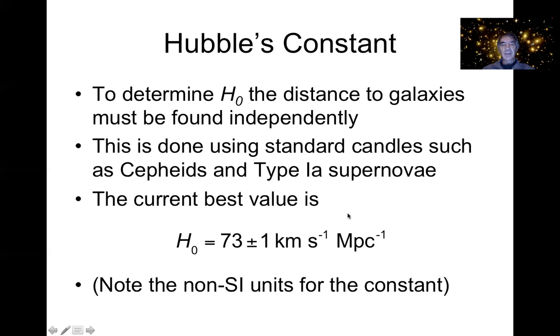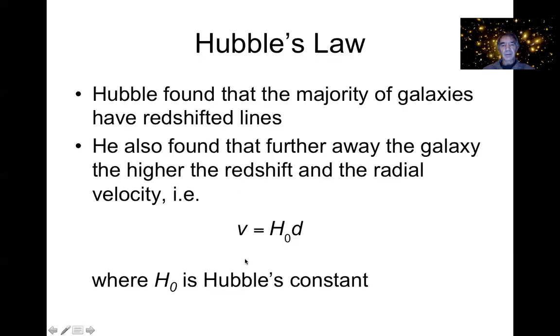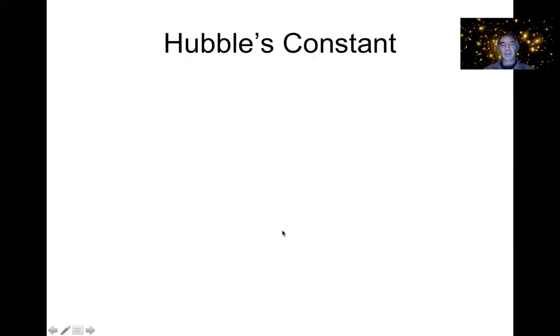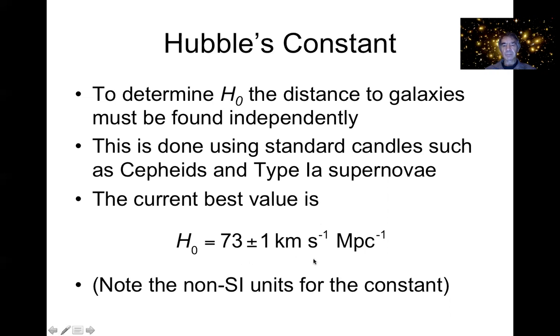Now you see here that the units are clearly not in SI units, in convenient units because we measure the recessional velocity of galaxies in kilometers per second and the distances in megaparsecs. So I would leave that formula, you use it in non-SI units is the easiest way to do it. So if you've got V in kilometers per second, D in megaparsecs and H is 73, then you're okay.